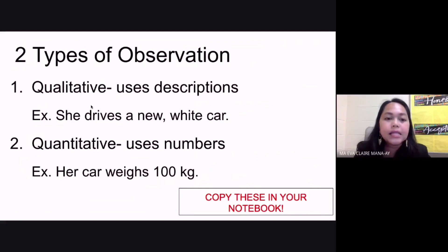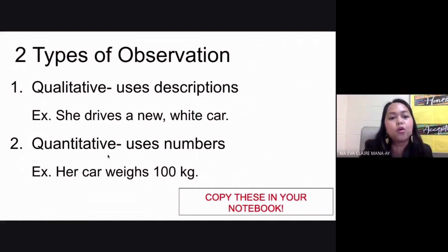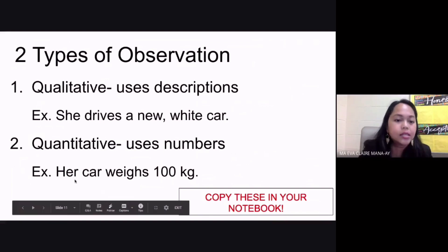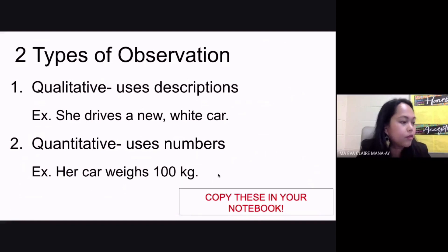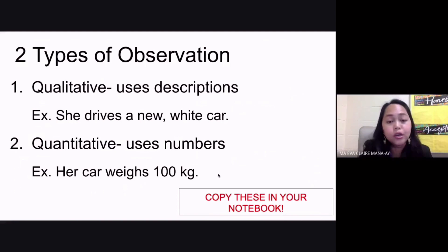The second type of observation is quantitative, and this type of observation uses numbers. For example, you say her car weighs 100 kilograms. This would be quantitative observation since we are using numbers or quantities.